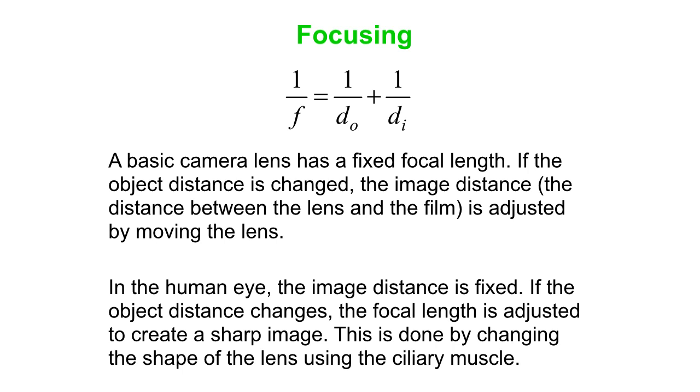So a different way of focusing. So that's a really important difference between cameras and between the human eye. And again, fancier cameras you can do a little bit of both. You actually will fiddle with the image distance but you can also fiddle with the focal length because you have various bits of glass to play with. You can move them around relative to one another.